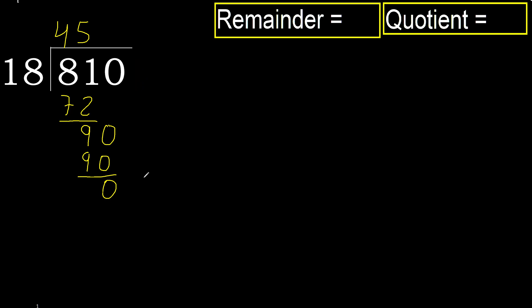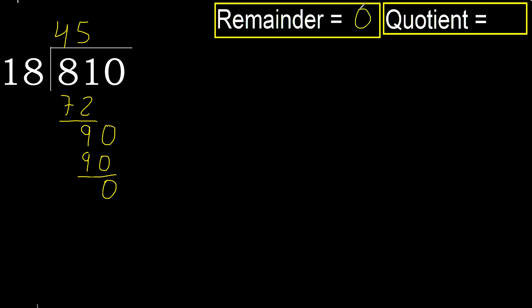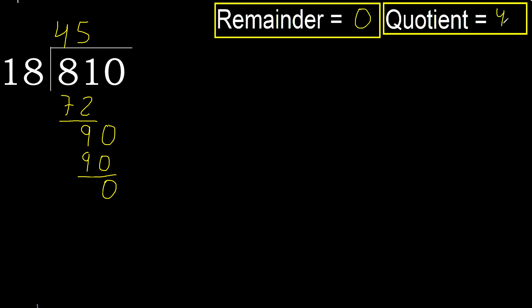Therefore, finish. 810 divided by 18 is 45.